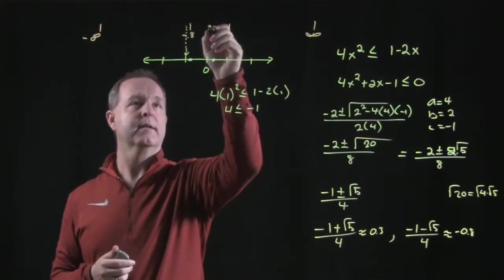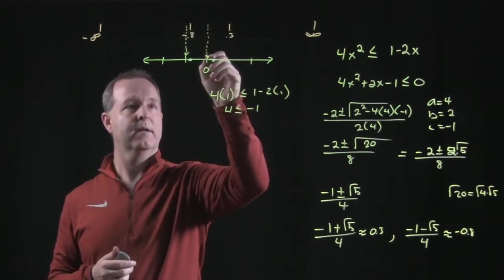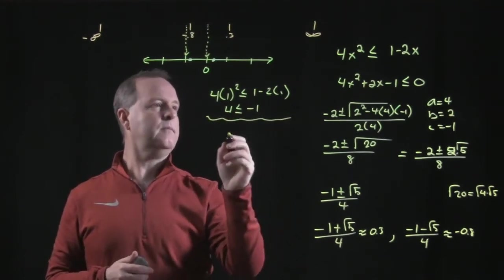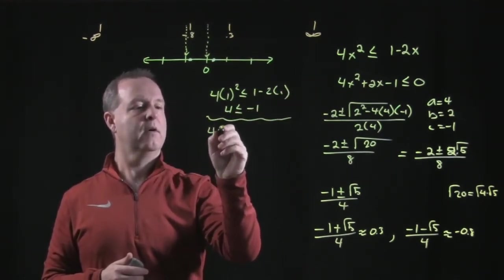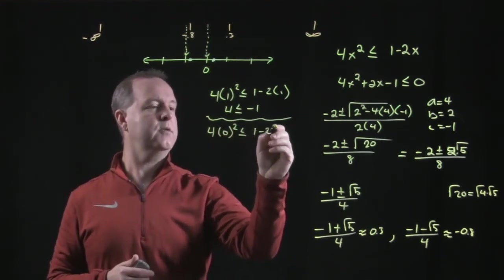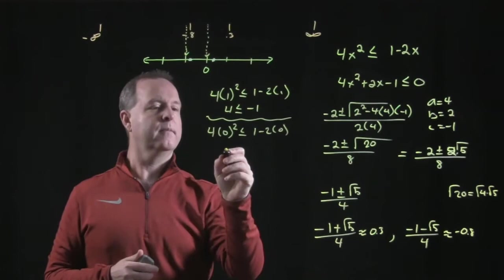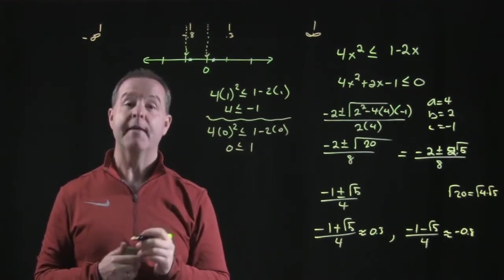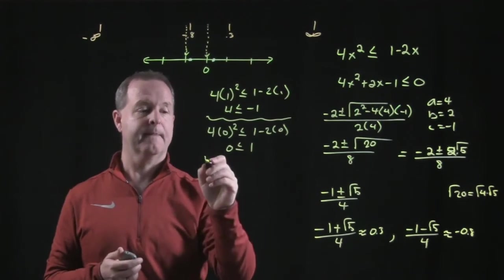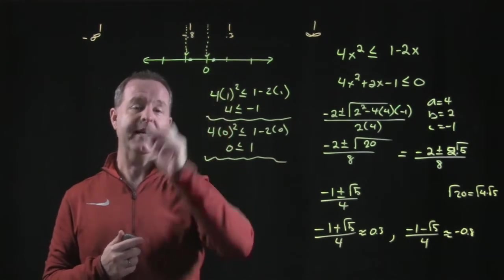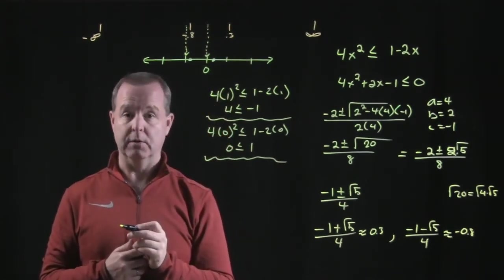Let's try this test point. In the second section right here, I'll try 0. Love 0. So 4 times 0 squared, is that less than or equal to 1 minus 2 times 0? Is 0 less than or equal to 1? That is true.